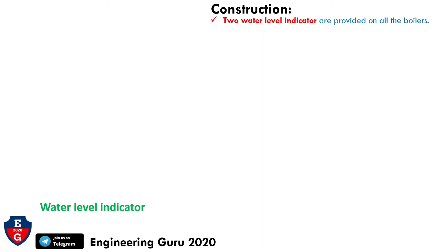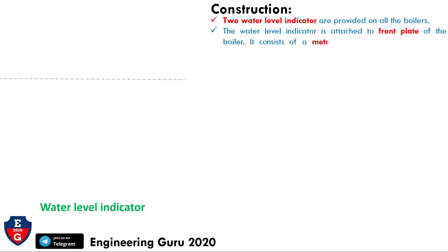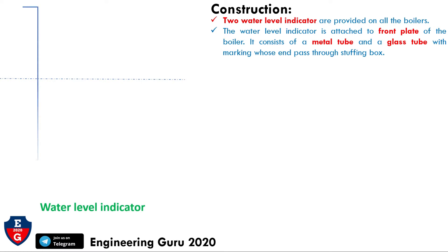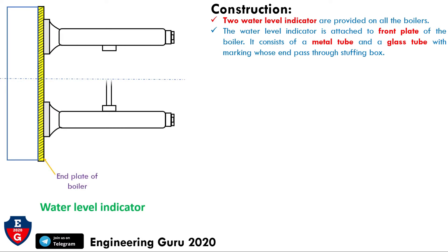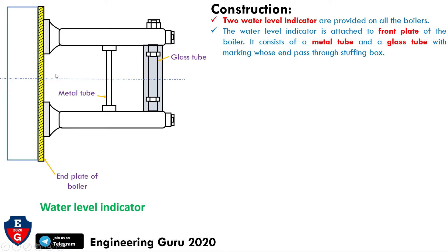Starting with the construction: two water level indicators are provided on all boilers. As seen in this figure, the water level indicator is attached to the front plate of the boiler. It consists of a metal tube and a glass tube with marking holes that pass through the stuffing box. Here you can see the metal tube and the glass tube, and in yellow the end plate of the boiler. The glass tube is made of toughened glass so that it can withstand boiler conditions.